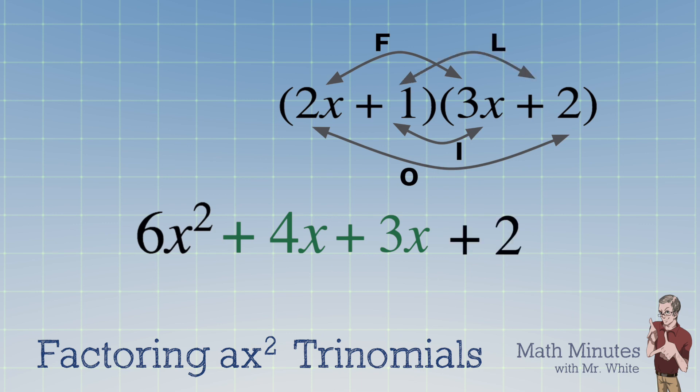And then the last terms, 1 times 2, and that equals 2. At the end, you can often combine those middle terms into a single term. 4x plus 3x is 7x in this case, and you get your final answer, which is a trinomial.